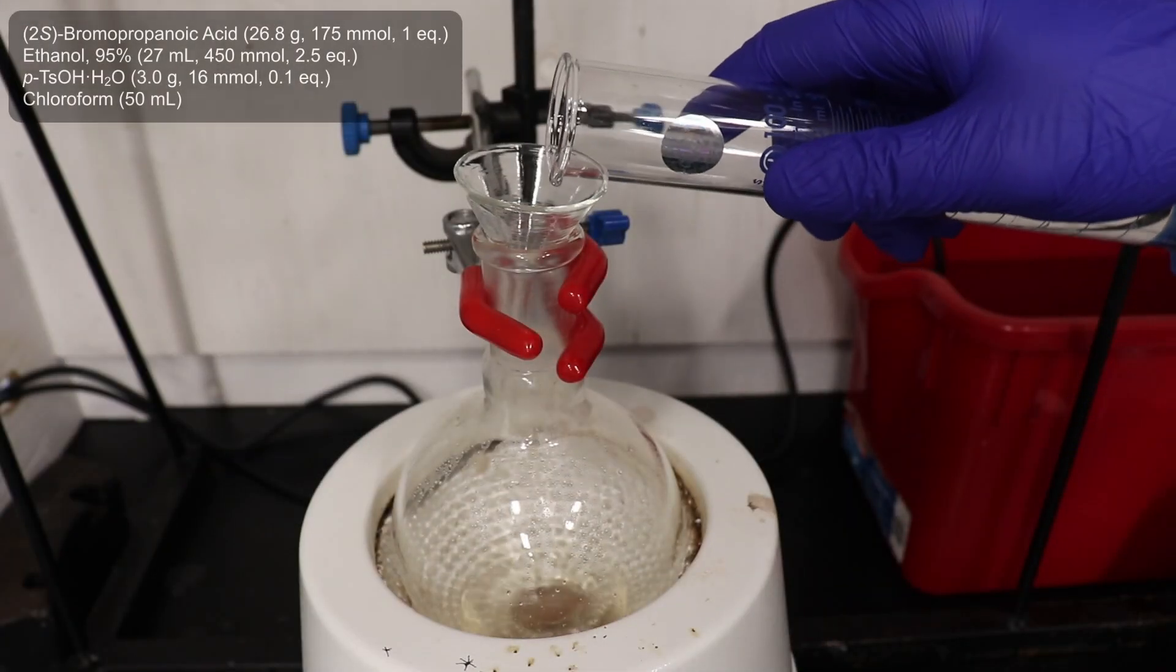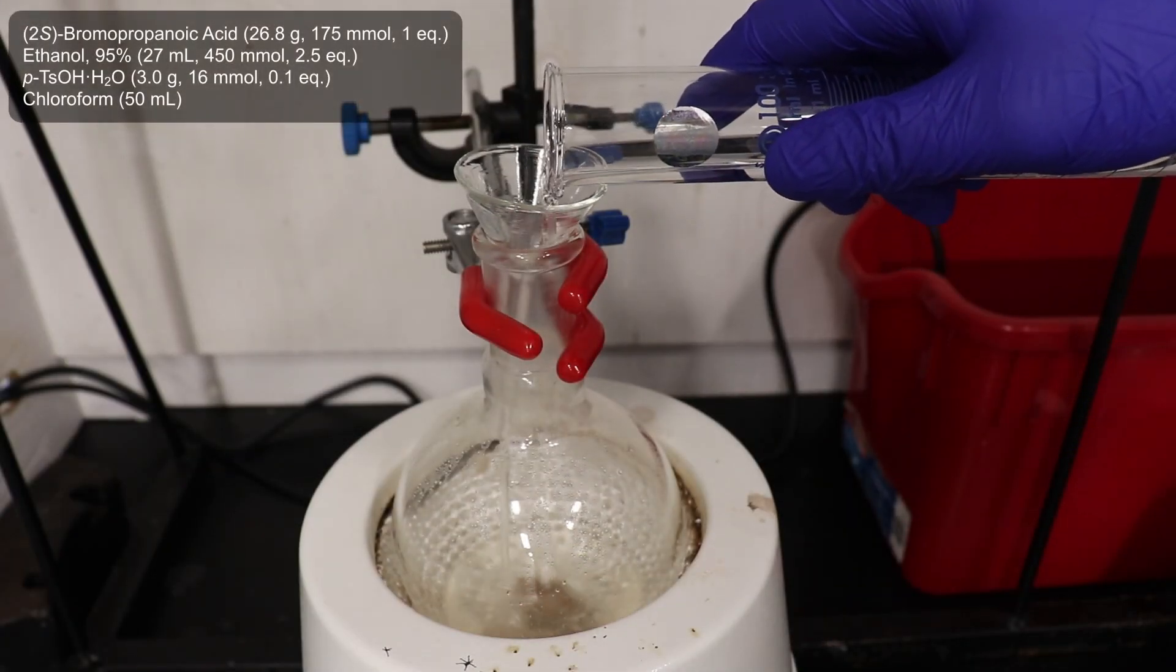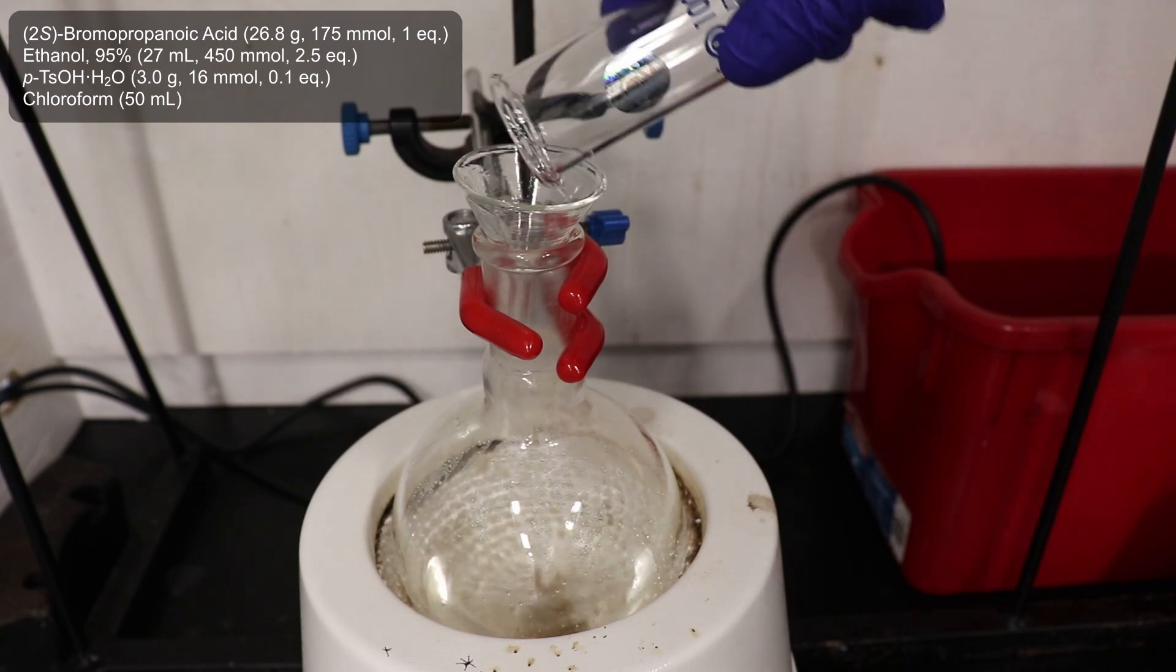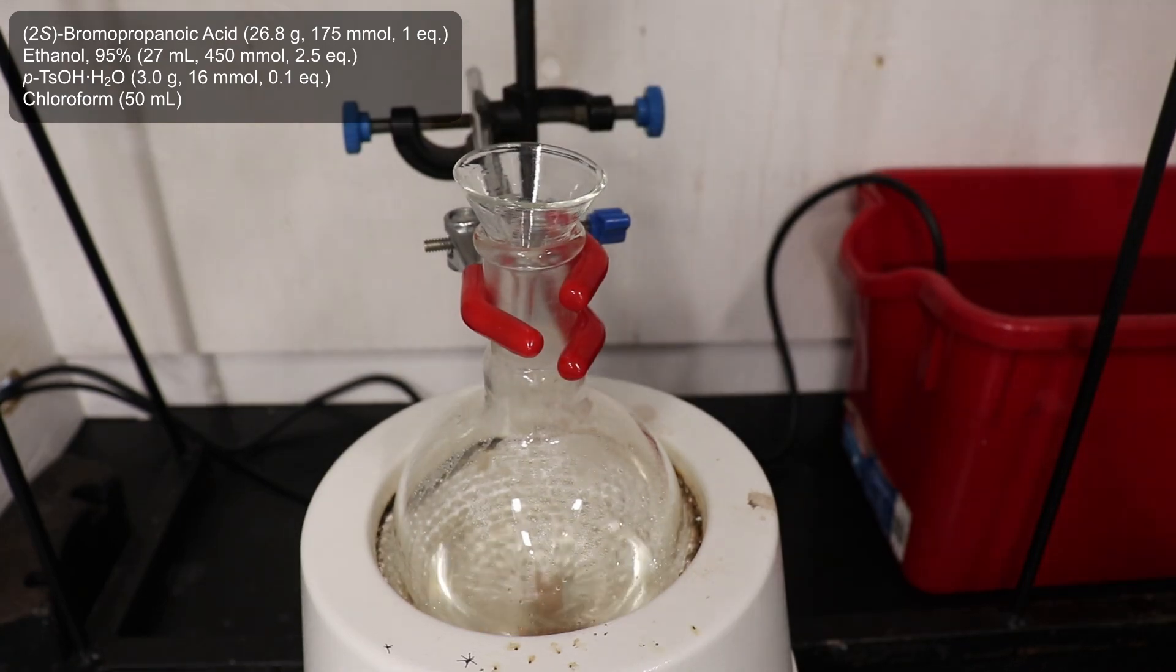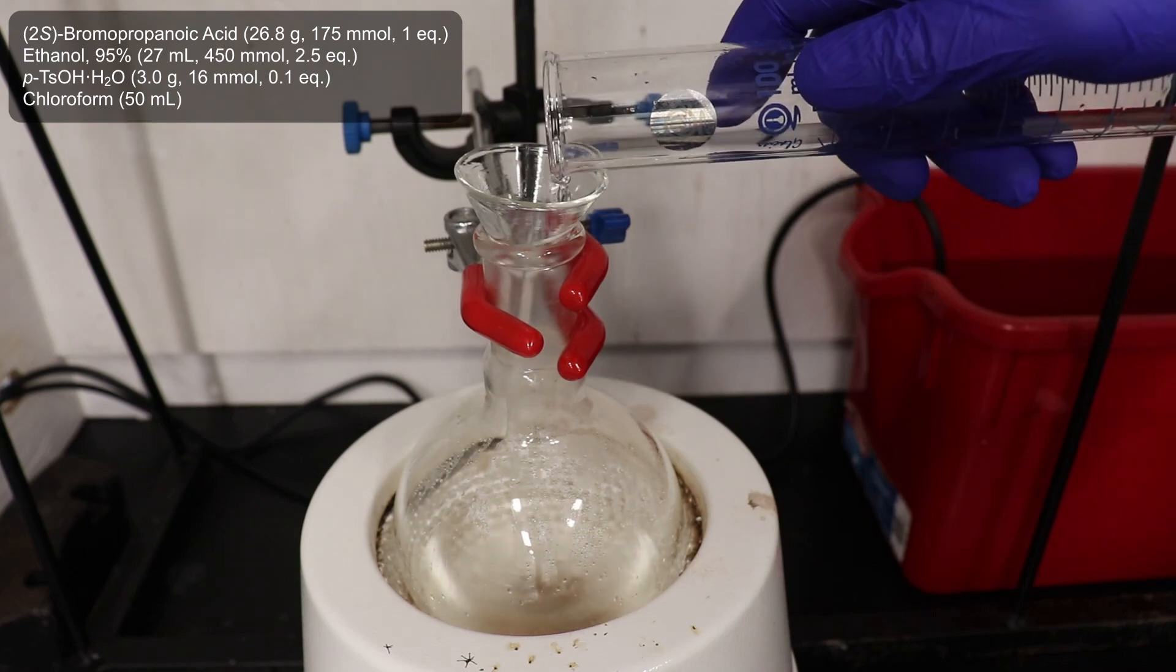To begin the esterification reaction, the 500 mL flask, now containing 26.8 grams of the crude 2-bromopropanoic acid, was placed in a 500 mL heating mantle. To this was added 50 mL of chloroform,